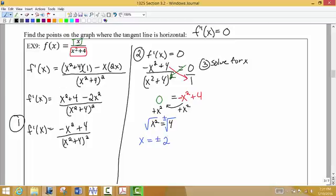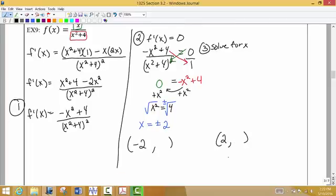One of them is at positive 2, and one of them is at x equals negative 2. I would like to find the y values that correspond to these x values. So I'm going to go ahead, and remember, we're talking about points on the original graph. So I'm going to put negative 2 in place of x in the original function. So I'm going to go back up to the top. So that would be x divided by x squared plus 4.